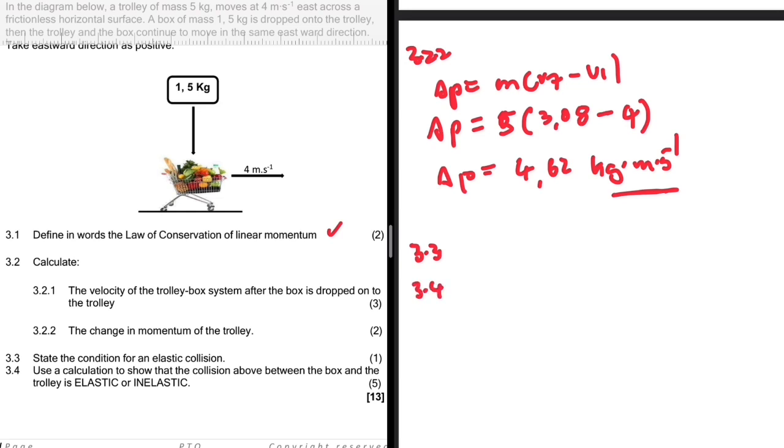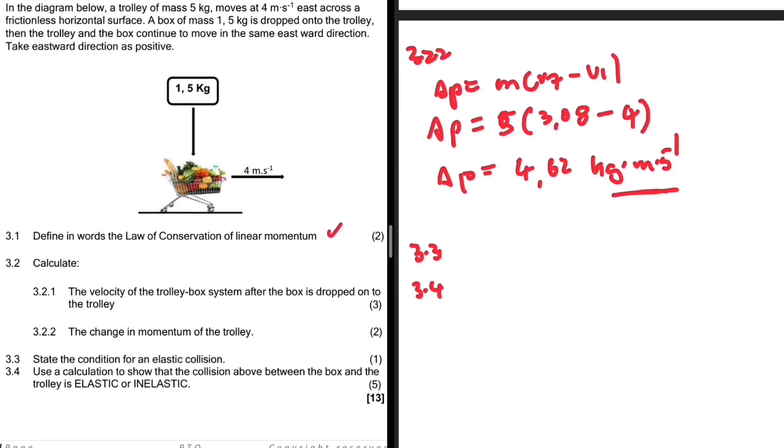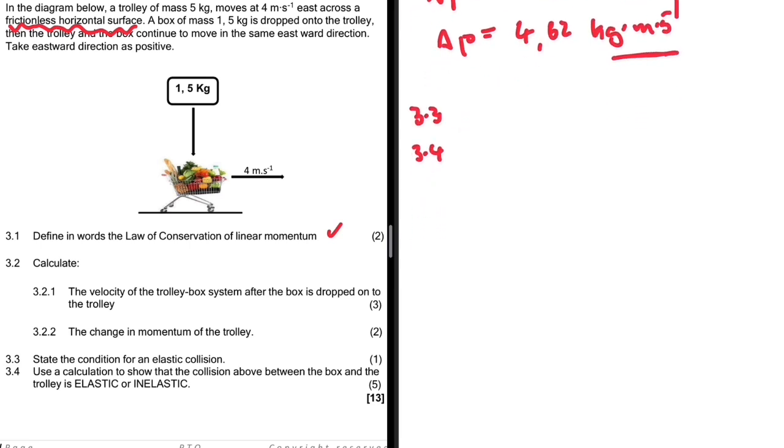3.4 is saying use a calculator to show that the collision between the box and the trolley is elastic or inelastic. We don't have to show that momentum is conserved anymore. We were told it's on a horizontal, frictionless surface. If it is moving on a frictionless horizontal surface, the linear momentum is conserved. That is why we use that theorem in 3.2.1. So already the linear momentum is conserved.